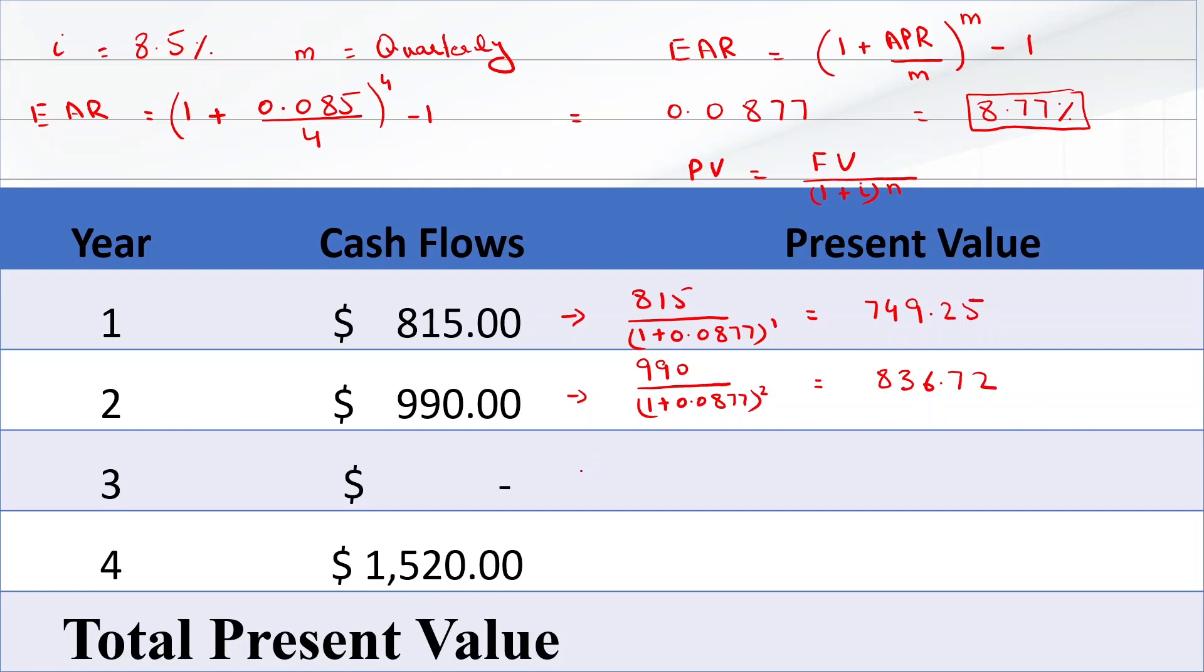For Year 3, the present value will be 990 divided by 1 plus 0.0877 raised to power 4, which equals $1,085.75.